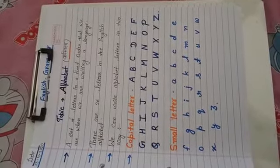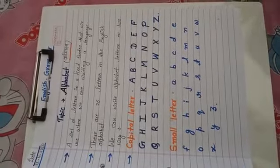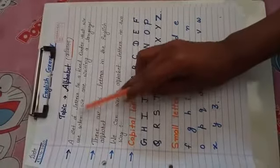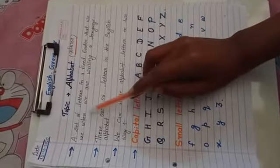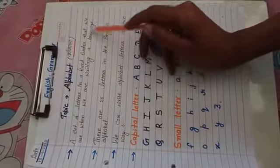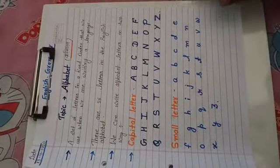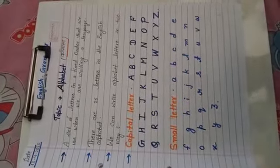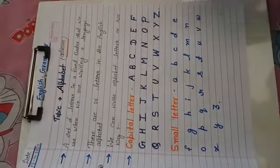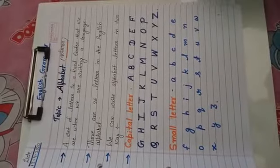You can see I have written in the copy. Look, a set of letters in a fixed order that we use when we are writing a language. This alphabet is a set of letters and it is written in fixed order which we use to write English language. Now how do you make English language?